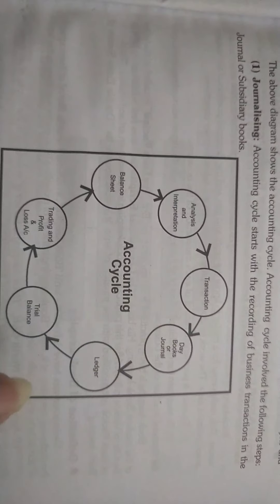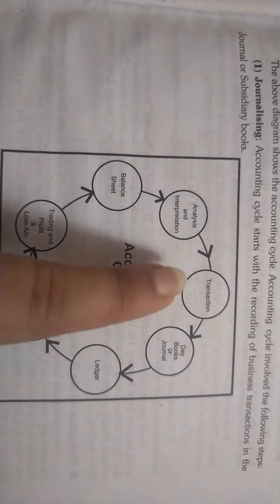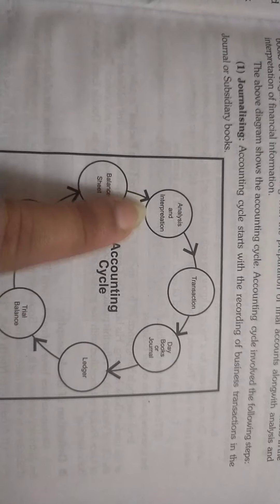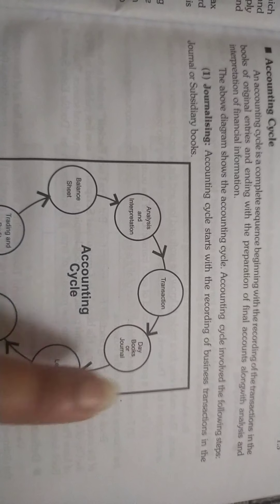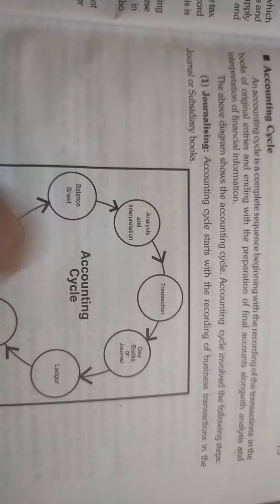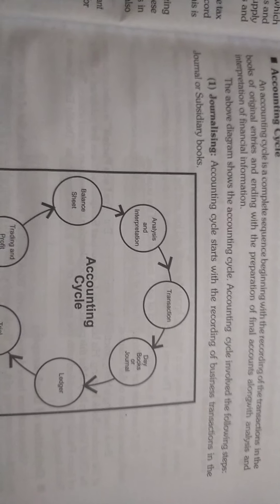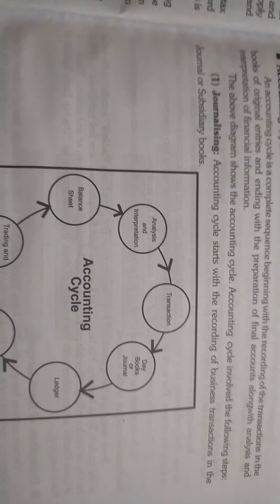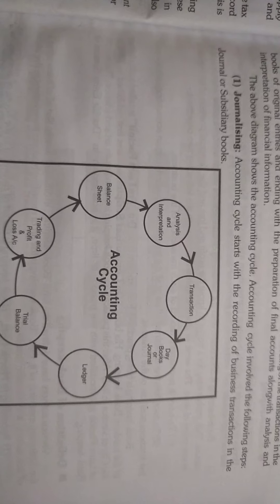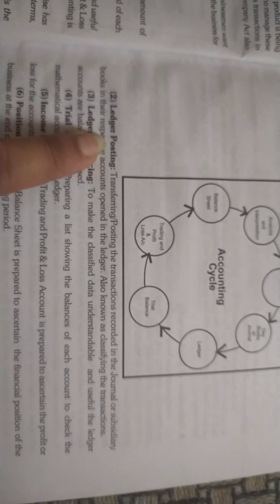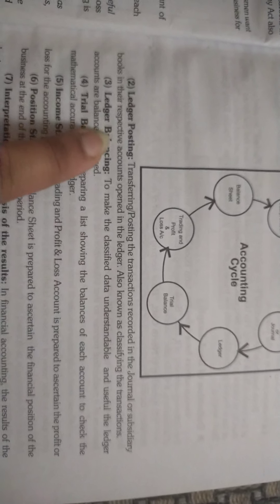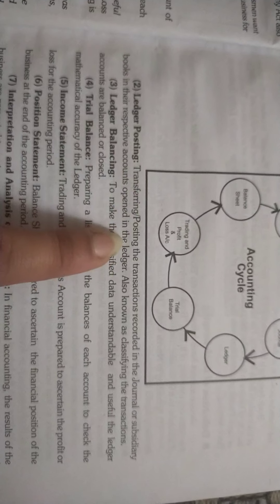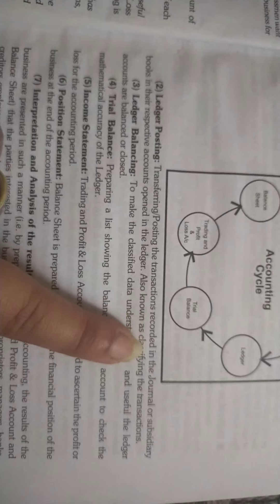This is our total accounting cycle. We record the transactions in the general or subsidiary books. When we transfer the transactions in the journal or subsidiary books, that is the first step.